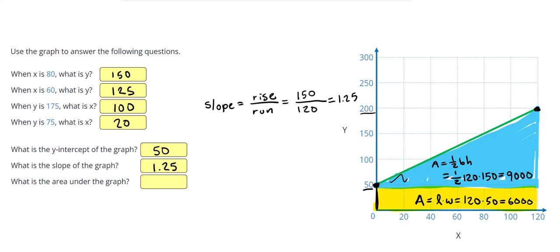Adding those two together, 9,000 plus 6,000, gives us the area of 15,000. A lot of times you'll be able to do that just with one calculation, either a triangle or a rectangle, but if things are a little more complicated, break it up into multiple shapes.